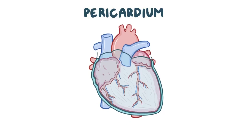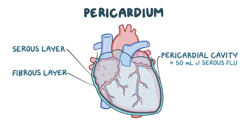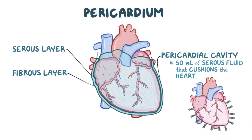The pericardium is a sac that covers the heart and the roots of the great vessels. The pericardium has two layers: an inner serous layer and an outer fibrous layer, and the space between the two layers is the pericardial cavity. The pericardial cavity is normally filled with about 50 milliliters of serous fluid that cushions the heart from any kind of external jerk or shock, like a shock absorber. The pericardium also fixes the heart to the mediastinum to prevent it from twisting so that the big vessels don't get pinched shut.